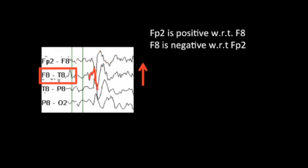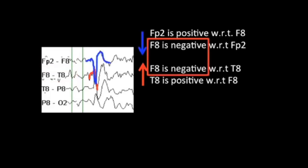If we look at the next channel, which is F8-T8, we see a slight upward deflection at the sharpest point. We can say that this would suggest that either F8 is negative with respect to T8, or T8 is positive with respect to F8. What we see in common between these two tracings is that F8 is relatively negative in both channels.